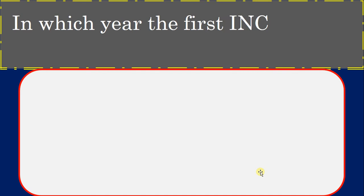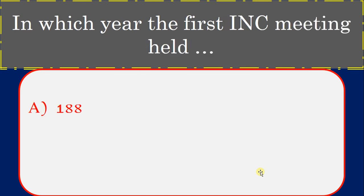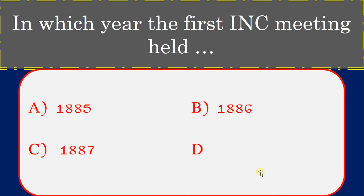In which year was the first INC meeting held? Options: 1885, 1886, 1887, 1890. Correct answer: 1885.